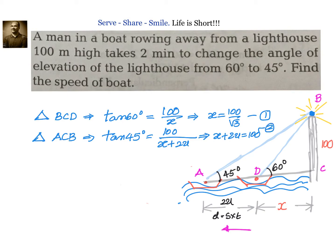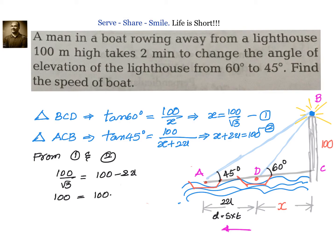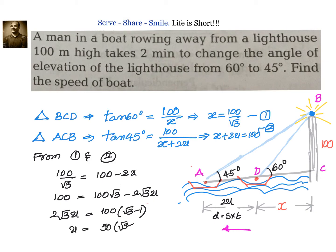From equations 1 and 2, substituting x equals 100 by root 3 and eliminating x: 100 by root 3 equals 100 minus 2u. Simplifying, 100 equals 100 root 3 minus 2 root 3 u, so 2 root 3 u equals 100 into root 3 minus 1, giving u equals 50 into root 3 minus 1 divided by root 3. Rationalizing, u equals 50 into 3 minus root 3 divided by 3 meters per minute.